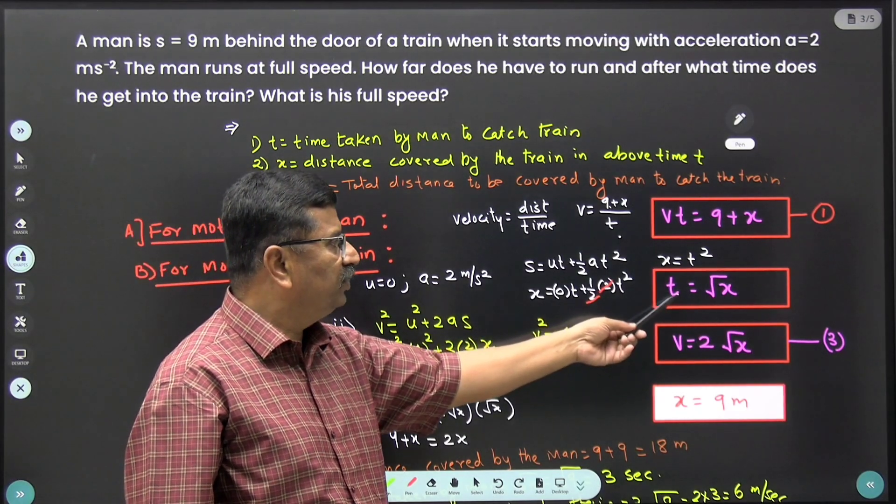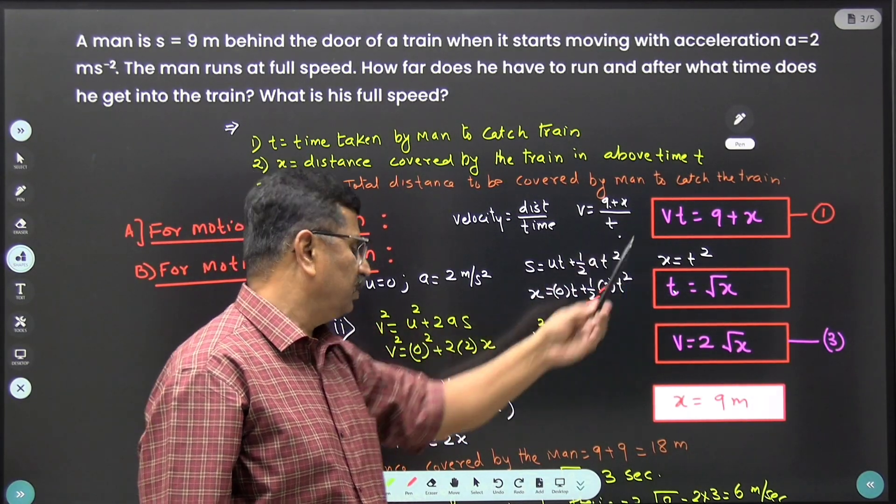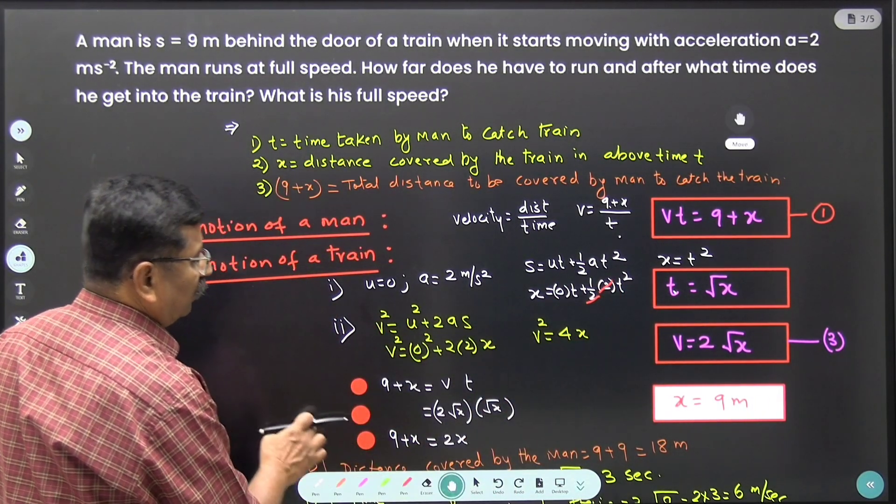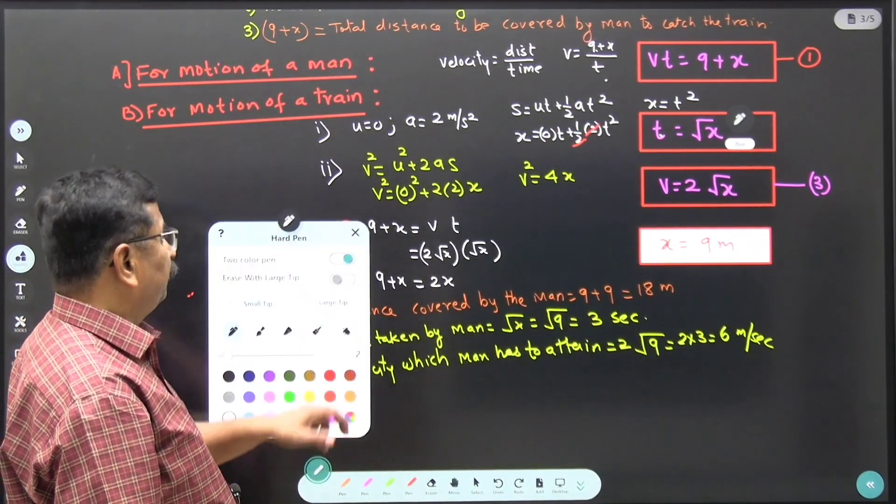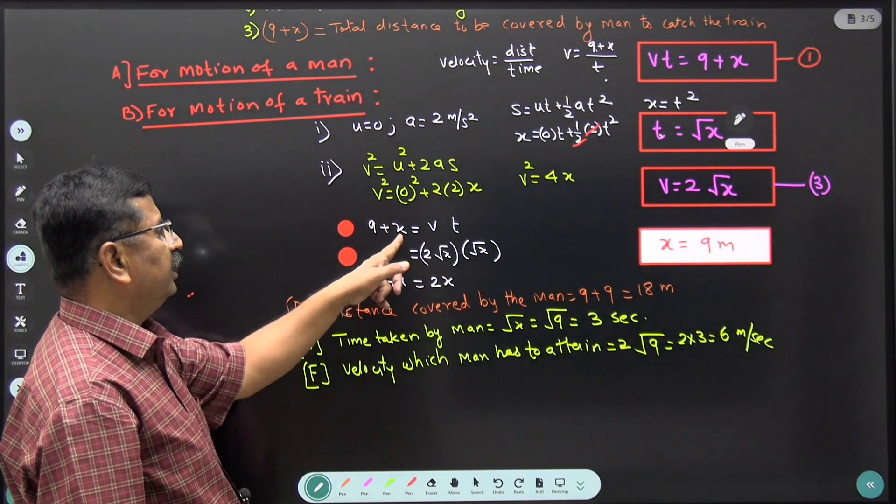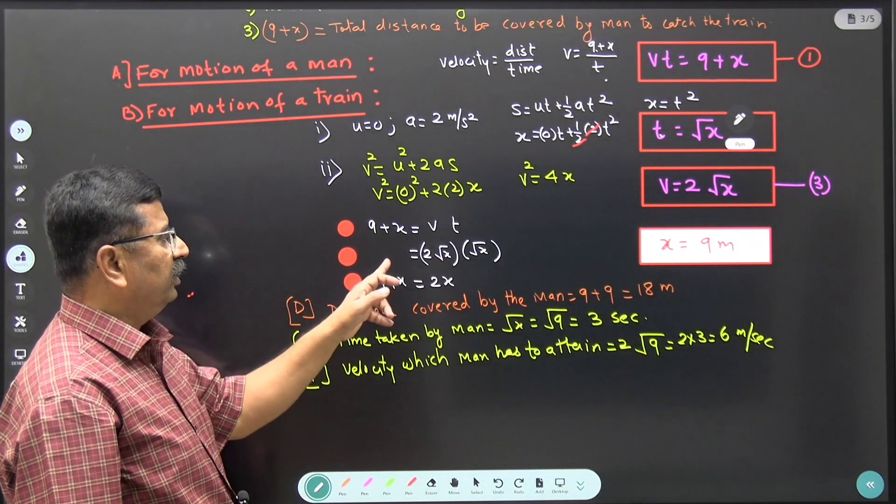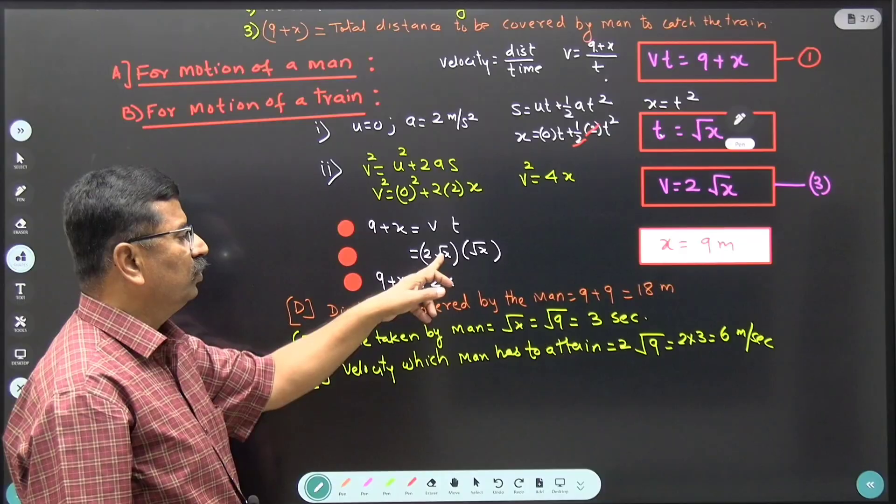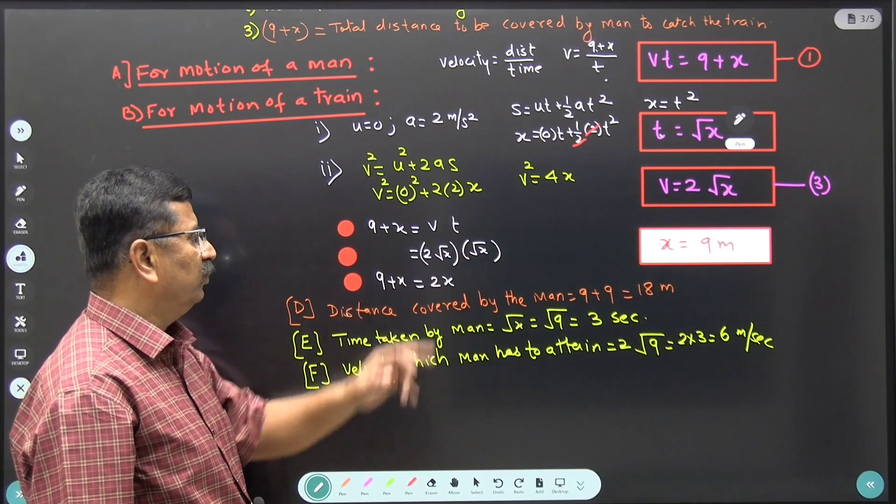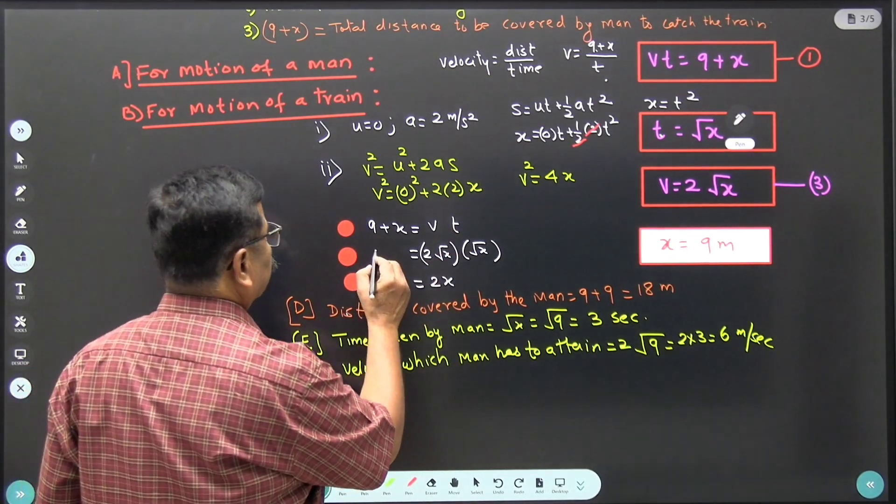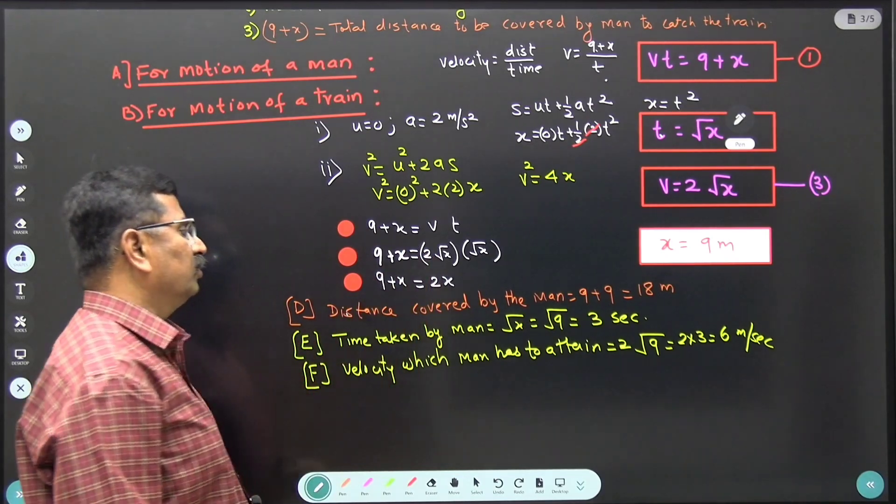Now substitute the value of this t and v in this equation. And let us see what we get. 9 plus x is equal to vt. Therefore, 9 plus x is equal to 2 root x for v and root x for t. So therefore, 9 plus x is equal to 2 x.